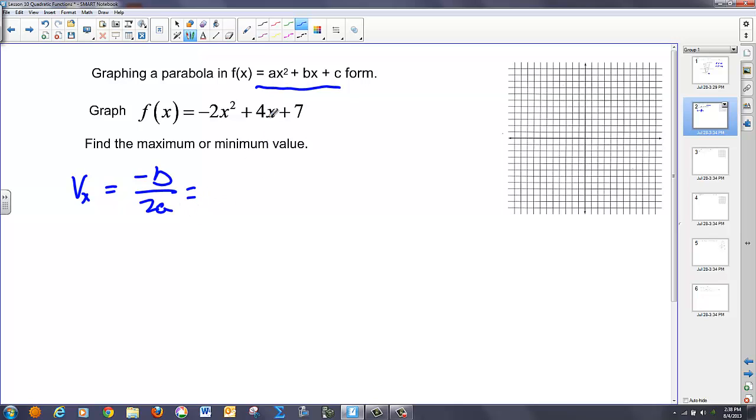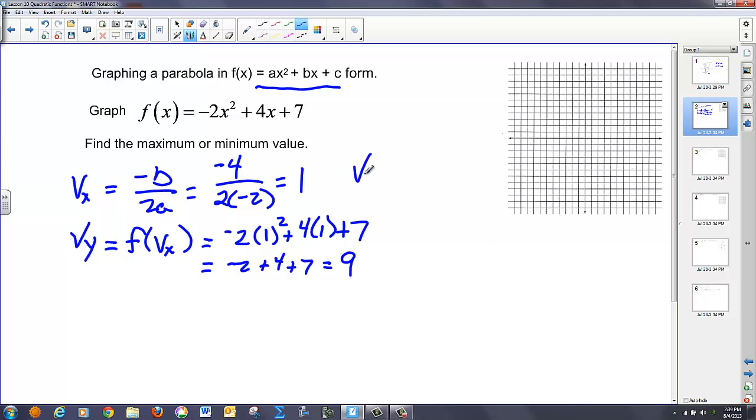So in this case, I find my b term, which is 4, I take the opposite of that, put that over 2 times the a value, which is negative 2, and I end up with 1. To find my y component of the vertex, I plug my Vₓ value into f(x) for x. So in this case, I have -2(1)² + 4(1) + 7 which will give me my y value of the vertex. So I have -2 + 4 + 7 or 9. So in this case, I have a vertex of (1, 9).